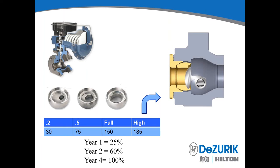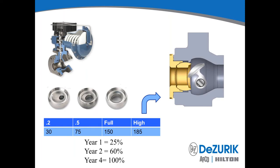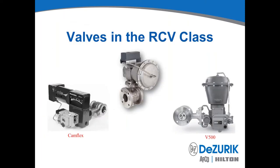I'll demonstrate later on how easy it is to change out the trim on the RCV. But sufficient to say right now, it's simply removing the seat retainer, pulling out the old seat, and dropping in the new seat. Let me also talk about the other valves that are in the class of the RCV — the Camflex and the V500.